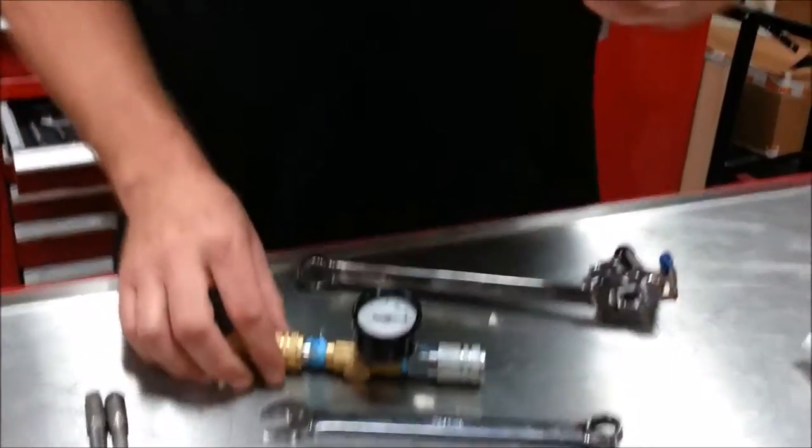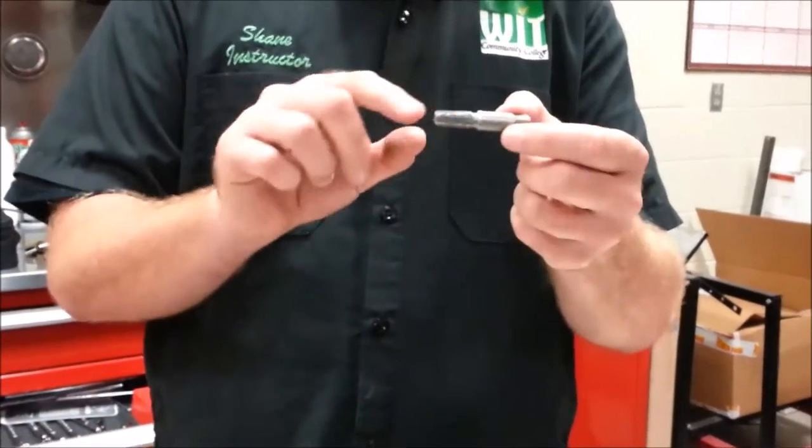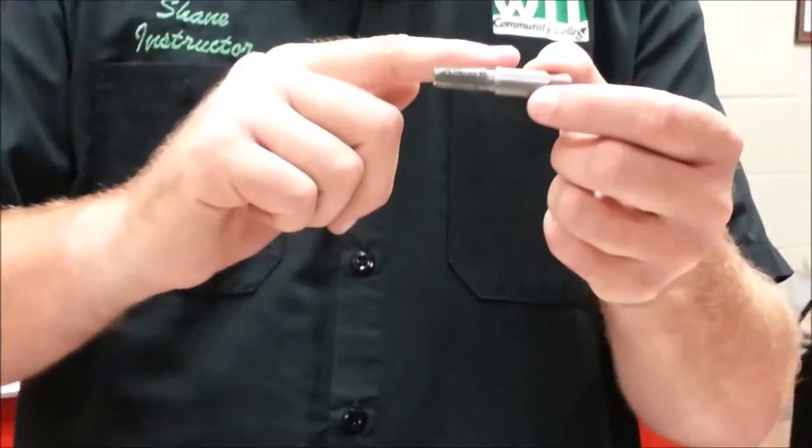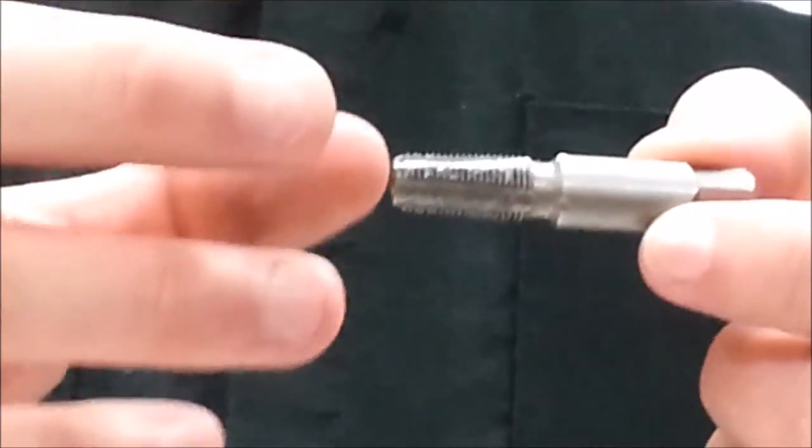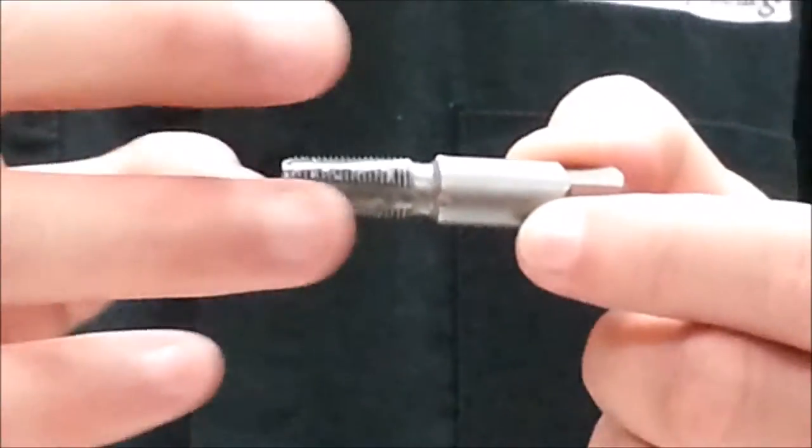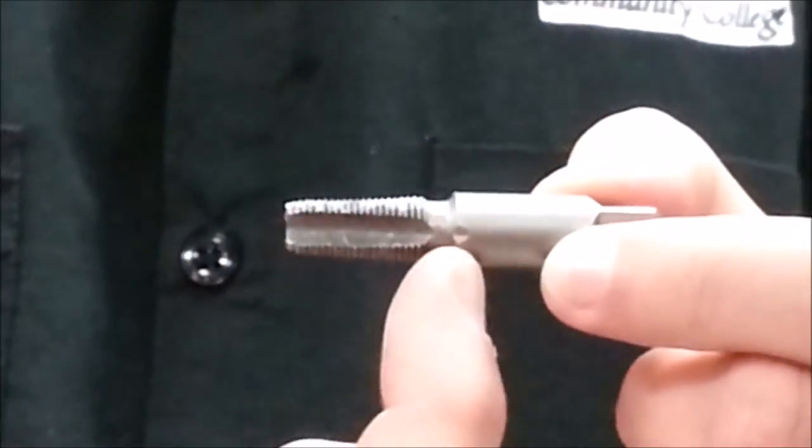So the question was, why would we use pipe thread? And what we notice on even the taps that will make the threads is that they're not straight, they're at a taper. Yesterday we practiced on regular taps and dies and they were straight just like a fastener. We didn't have it where it was a smaller diameter here and a larger diameter here.